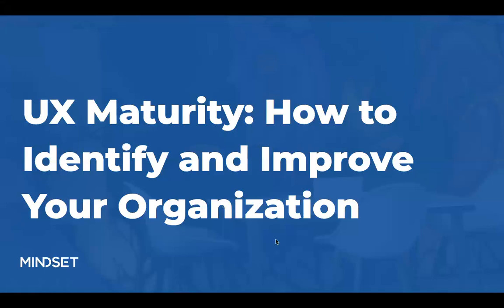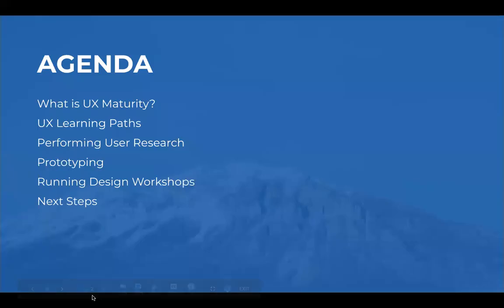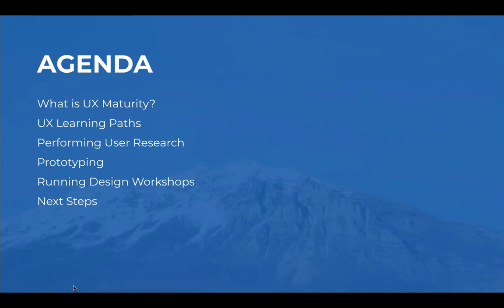Thank you, Amy. Today we're covering the topic of UX maturity — how you can identify it within your organization and some steps you can take to improve that UX maturity level. We'll be talking about what UX maturity is, the different components that make up that maturity level — including UX learning paths, performing user research, prototyping, and running design workshops — and then we'll close out with next steps on what you can do to implement these things within your own organization.